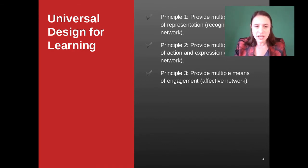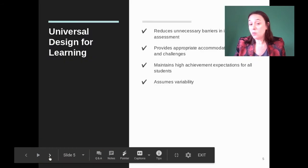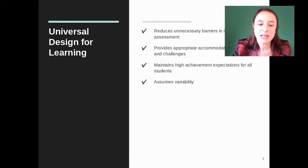Universal design for learning has three principles. The first principle is to provide multiple means of representation. The second is to provide multiple means of action and expression. The third is to provide multiple means of engagement. Multiple means of representation means there are lots of different ways to gather material and information. The second principle means there are different ways to express what you've learned. The third is to keep you involved in the class.